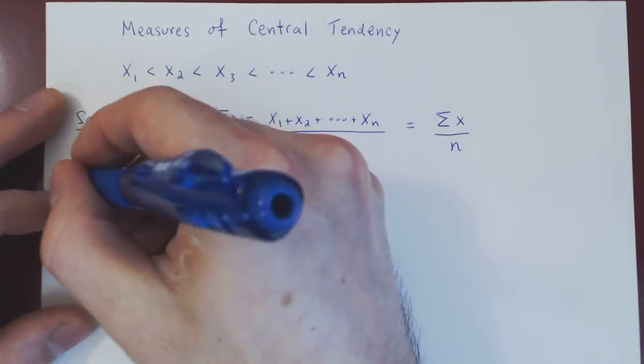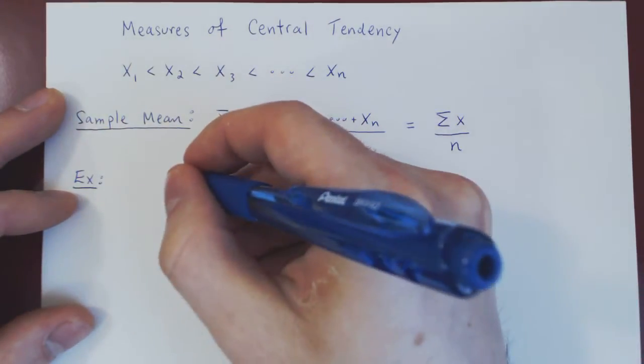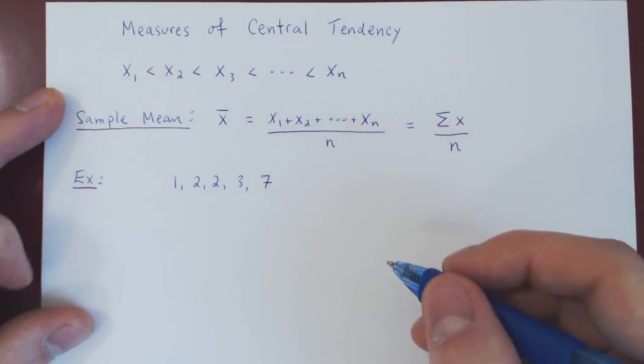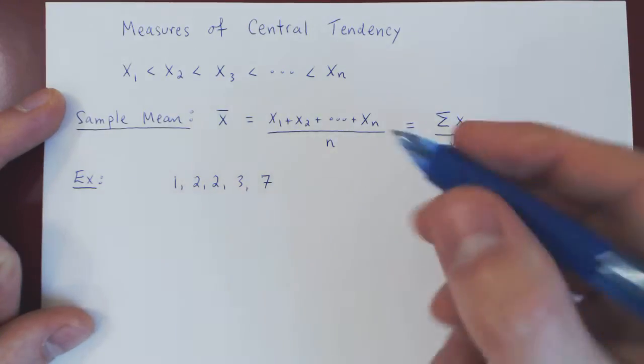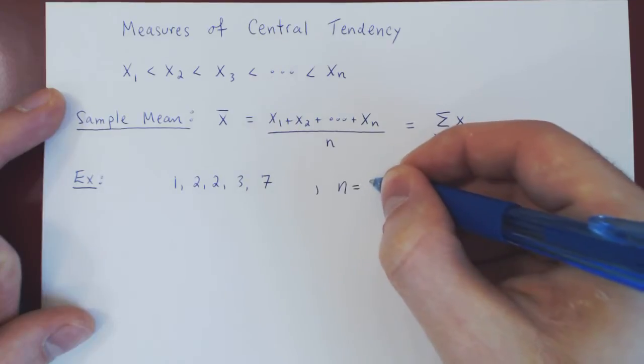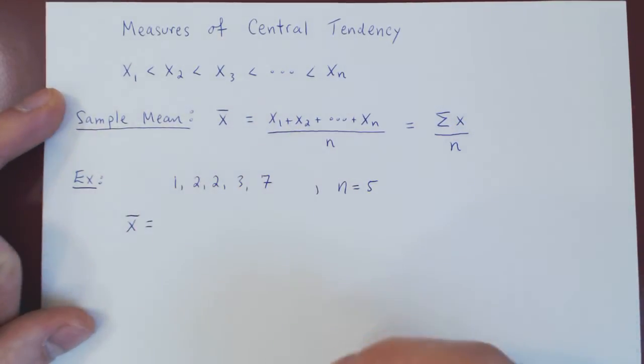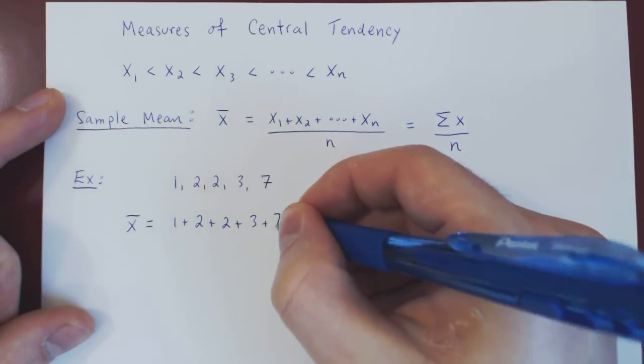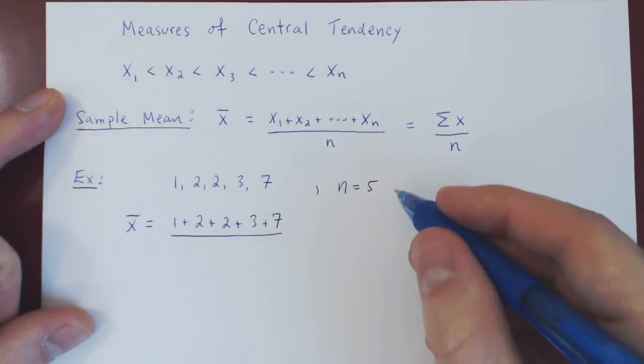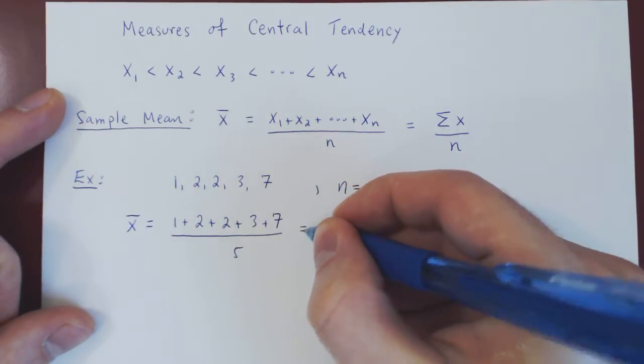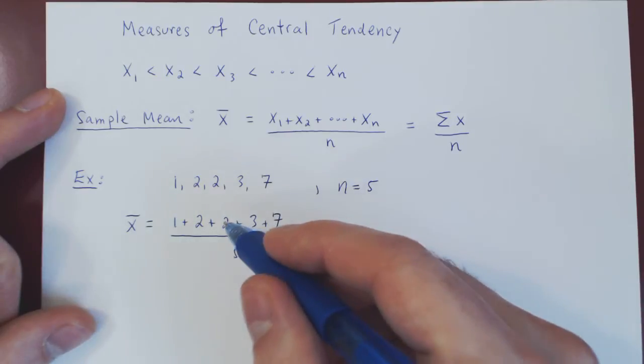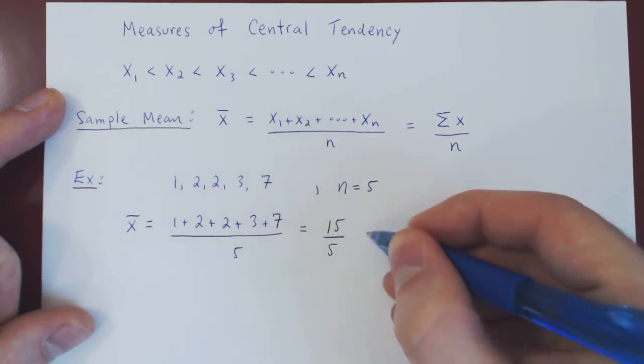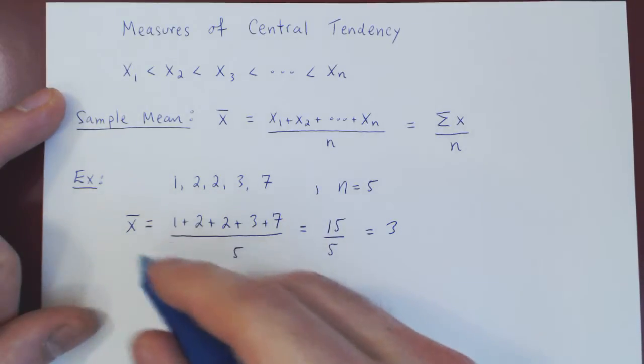Let's consider an example. Suppose we had 1, 2, 2, 3, and 7. So we have 5 values, n equals 5. And so x bar is the sum of our values, 1 plus 2 plus 2 plus 3 plus 7, over 5. If you add those up, you have 15 divided by 5, which simplifies to 3. So the average of our sample here is 3. If you notice, 3 is also an element of our data set, and this is purely coincidental.